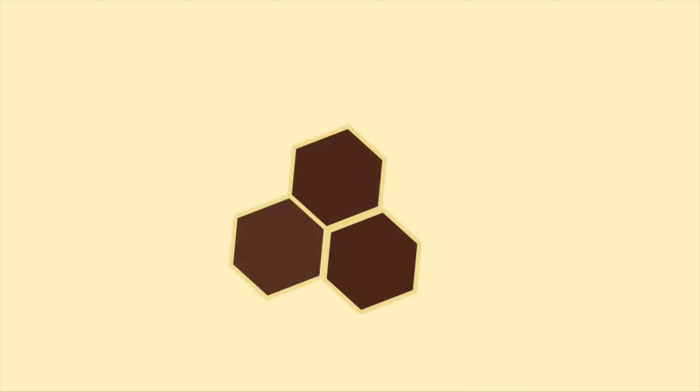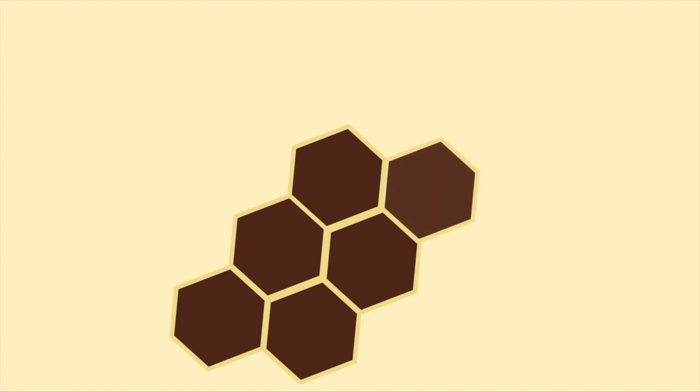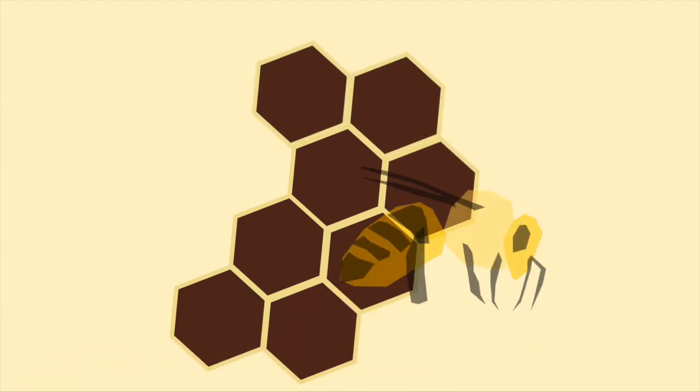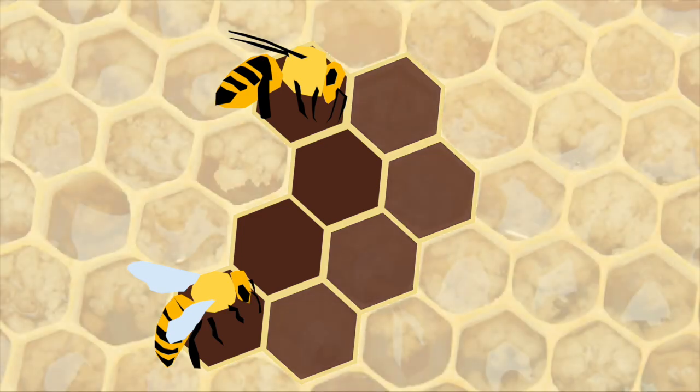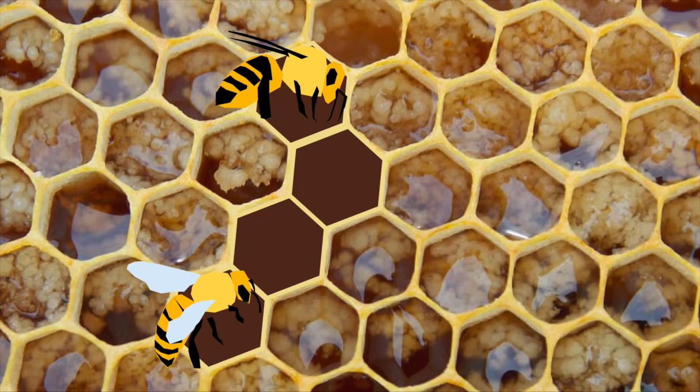We might not expect bees to care as much about tessellations as we do, after all it doesn't seem like a bee would even know what a polygon is, but the honeycomb arrangement of hexagons they use ends up being very economical, allowing efficient storage of honey for the amount of material required.